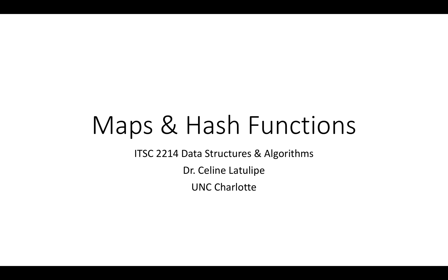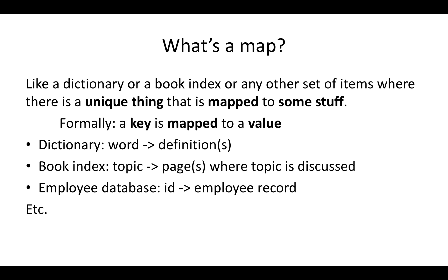Today I'm going to be talking about maps and how they use hash functions. A map is any kind of set of data where there's something you want to link with some other stuff. Think about a dictionary where you have words and you want to link them to the definitions, or the index in the back of a book where you have a concept and you want to link it to the pages where that concept is explained.